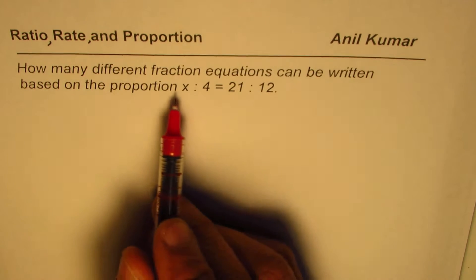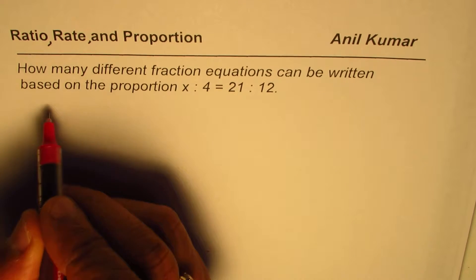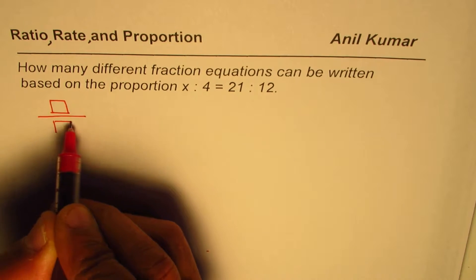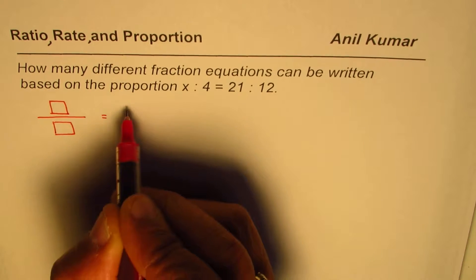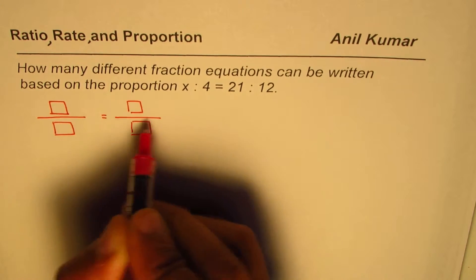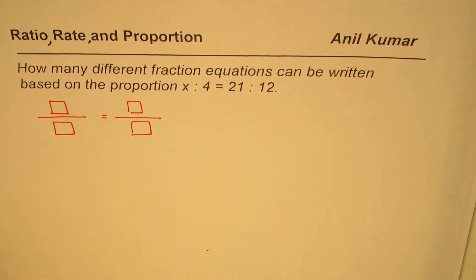Fraction equations based on the proportion means fraction is something on the top, that is the numerator, divided by denominator. Equals to numerator divided by denominator. This is an equation with equal to sign in between.